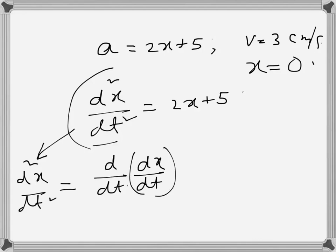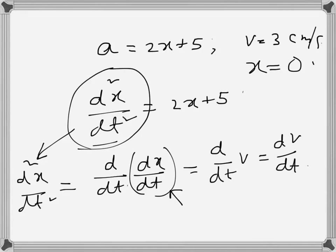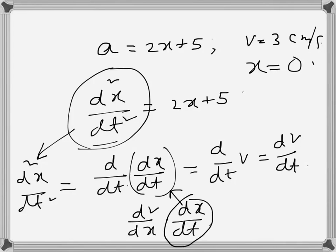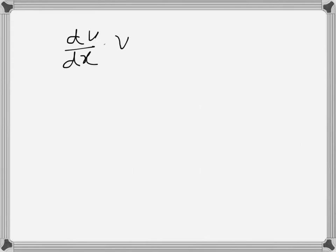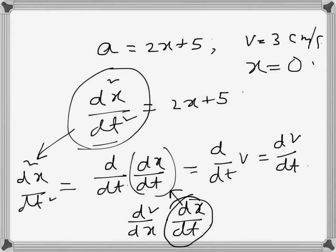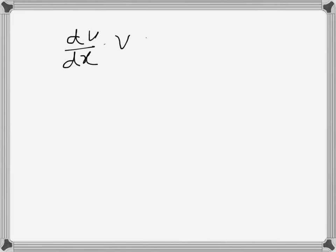We can write dv/dt, and then introduce dx by writing it as dv/dx times dx/dt. Now dx/dt is velocity, so this becomes dv/dx times v — that is, v times dv/dx. So we now have velocity appearing in the acceleration expression.